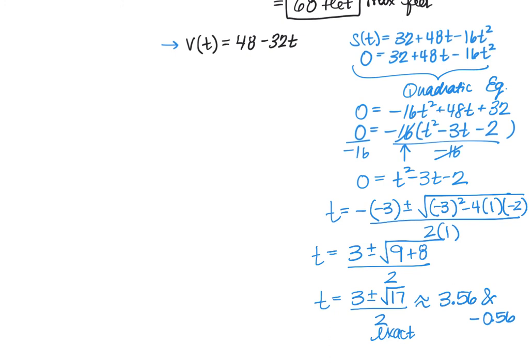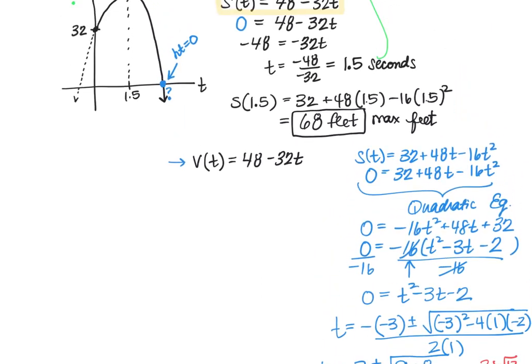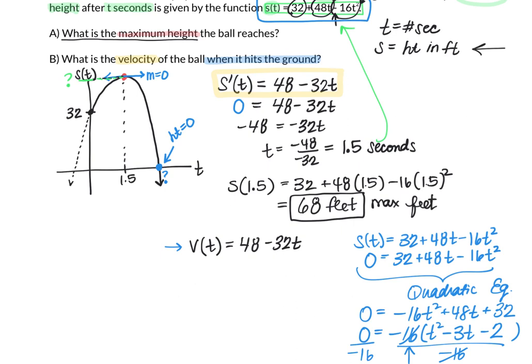Remember, these are t values, times. Since time is a number of seconds, a negative value doesn't make sense, so we throw out that solution and keep t ≈ 3.56 seconds. That value came from 3 plus √17 divided by 2. Looking back at our graph, there are two places where the parabola intersects the t-axis. One is negative on the left, but we're only keeping the one on the right at approximately 3.56 seconds when the ball hits the ground.